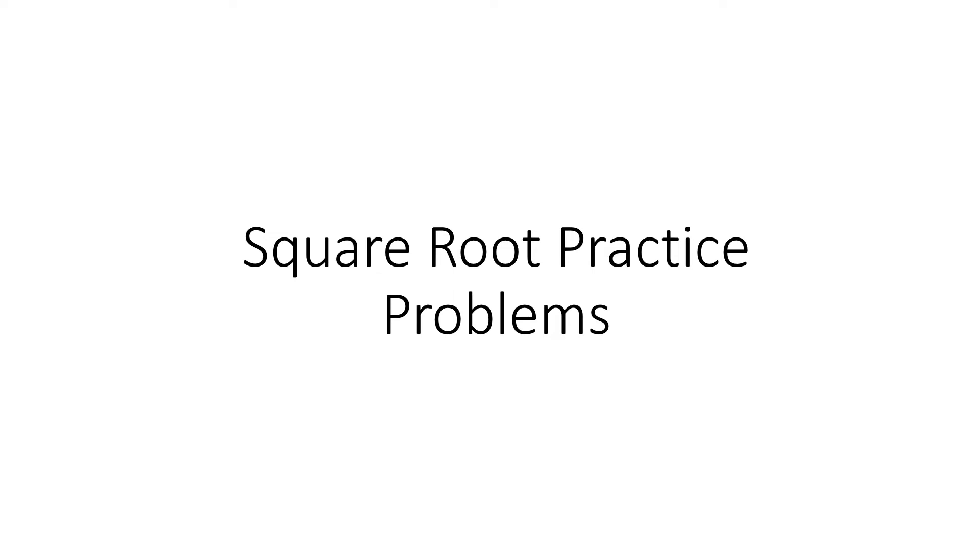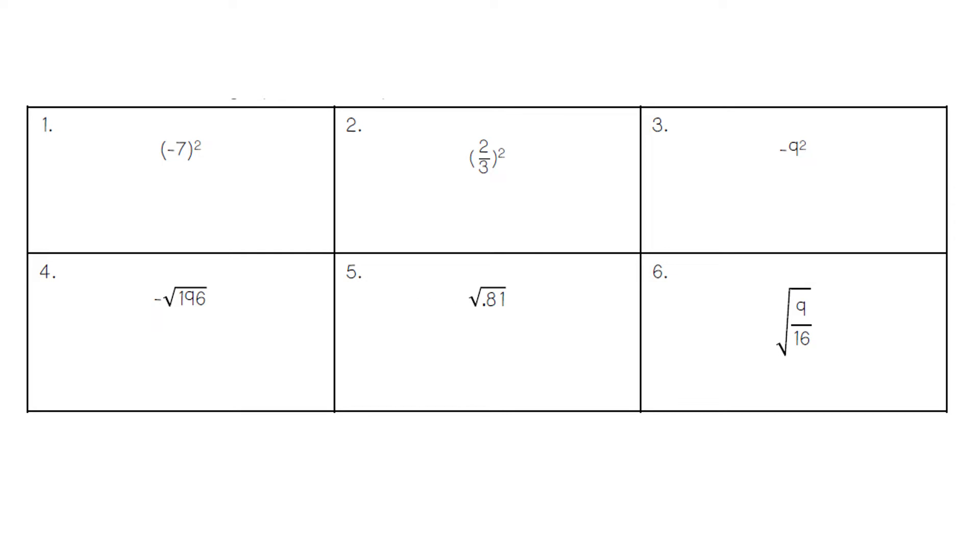This video is over square root practice problems. For problem number one, we have negative seven squared. We can break that problem down into negative seven two times: negative seven times negative seven. Two negatives make a positive 49.